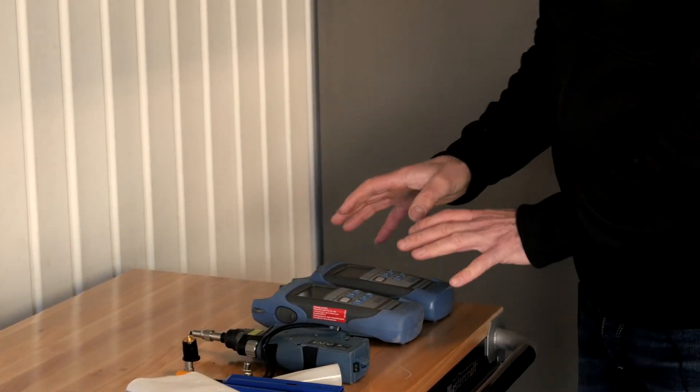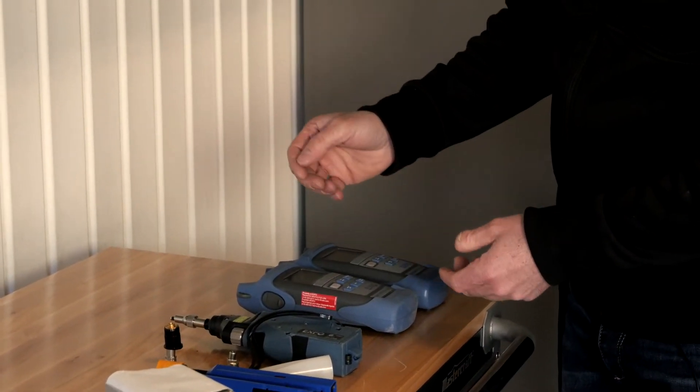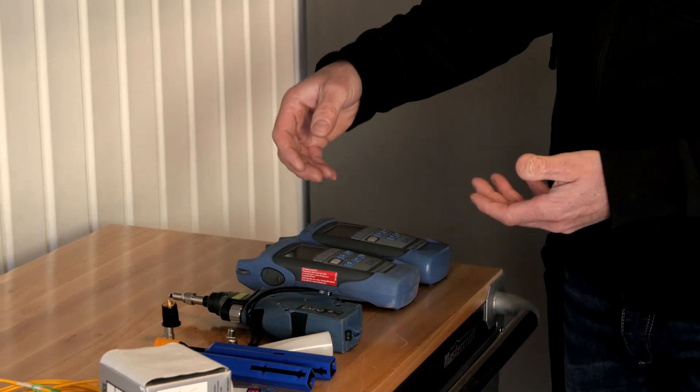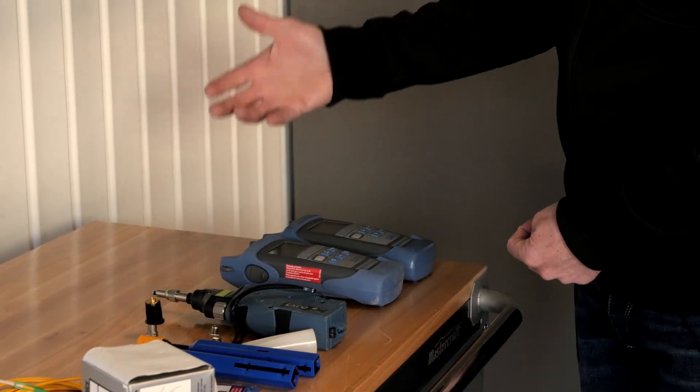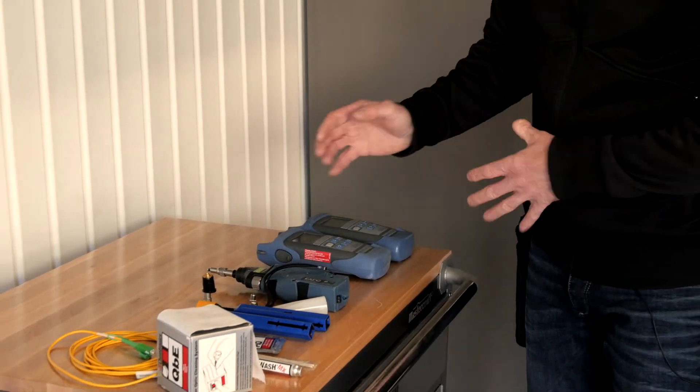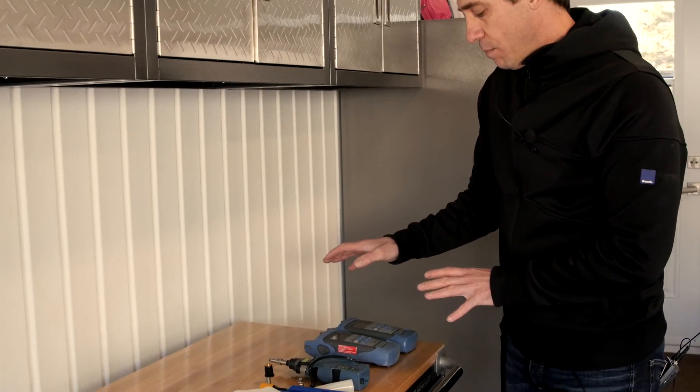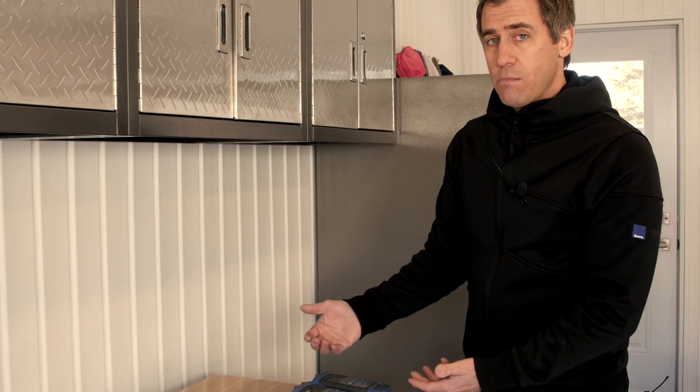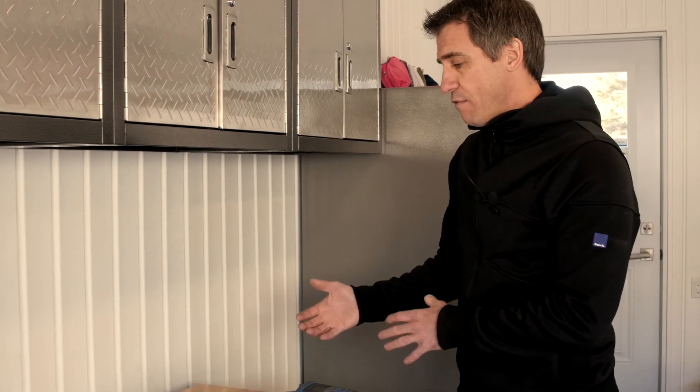Then another tool that we are using in FTTH service activation, of course, is the PON power meter, the PPM 350. Within Verizon, there's various flavors of that tester. You have to make sure that you have the right model. We do have models that we sold in the past that are designed to test BPON networks. And obviously today what's being deployed is GPON.